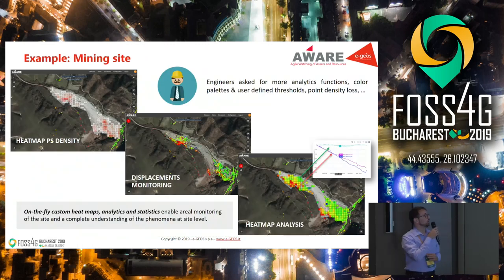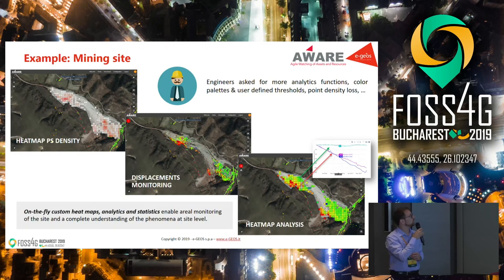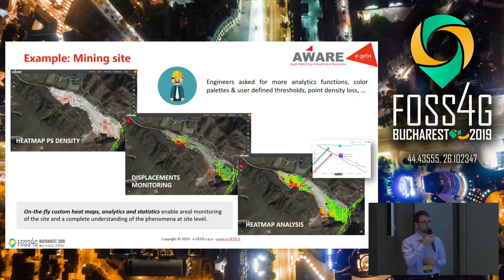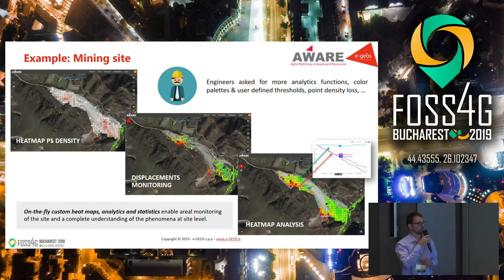Here we have an example. We worked with some engineers in a mining site to monitor the mine. We have three products here: we generated some heat maps. In the top left, we have the heat map of PS density, showing how the permanent scatterers are distributed in the mine. This is very important because permanent scatterers could disappear due to a collapse or terrain moving. And we have products for displacement monitoring, using heat map analysis aggregation, because the engineers want to monitor whether the land is moving.